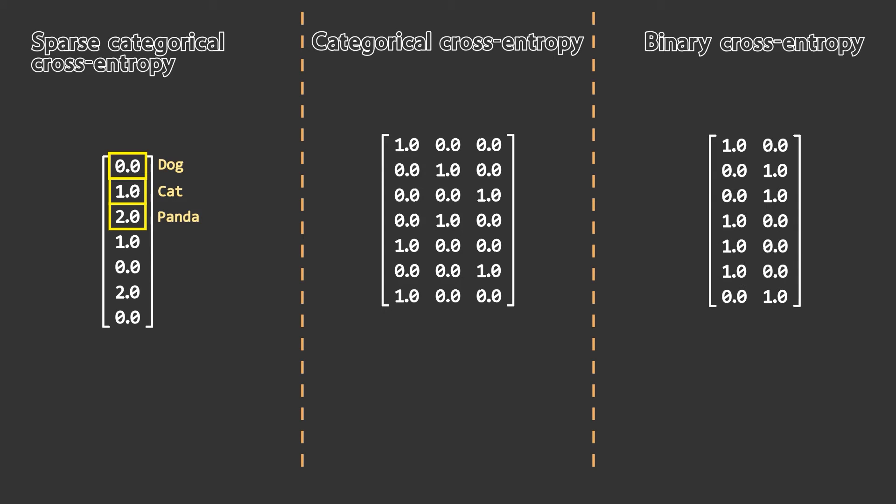Binary cross-entropy is not much different from categorical cross-entropy. The only difference is that in categorical cross-entropy you can have any number of classes, but in binary cross-entropy you can only have 2 classes — therefore the number of columns cannot go beyond 2. Now you know when to use which cross-entropy loss function, but let's look at how to calculate it.